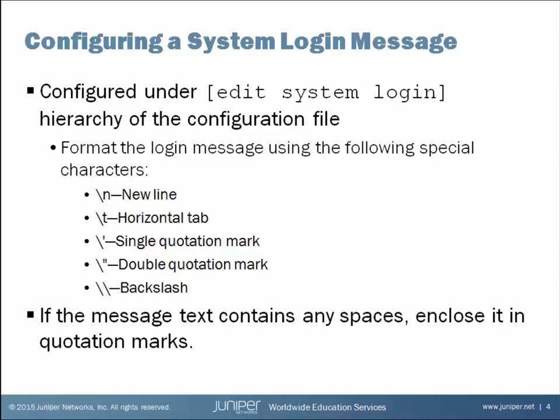There is a backslash N special character combination that can be used to represent a new line — essentially a carriage return in the message. There's also a backslash T that can be used to insert tabs. You can use these to format the message so it appears the way you'd like. Your message is probably going to have spaces, so you'll need to enclose it in double quotation marks. Now let's connect to an MX80 routing platform, configure a login message, commit it, and see how it works.